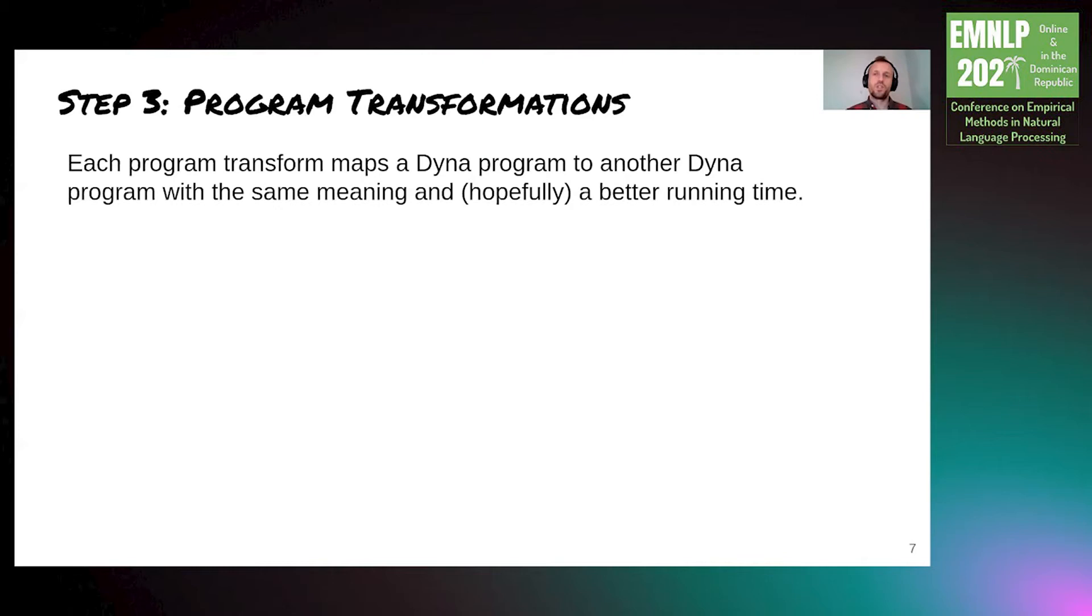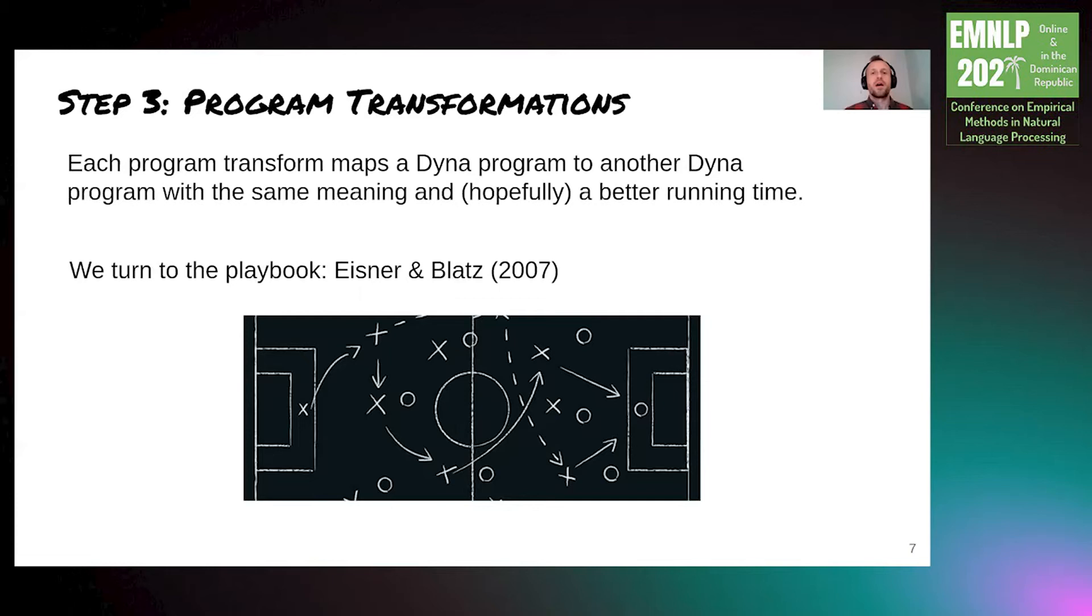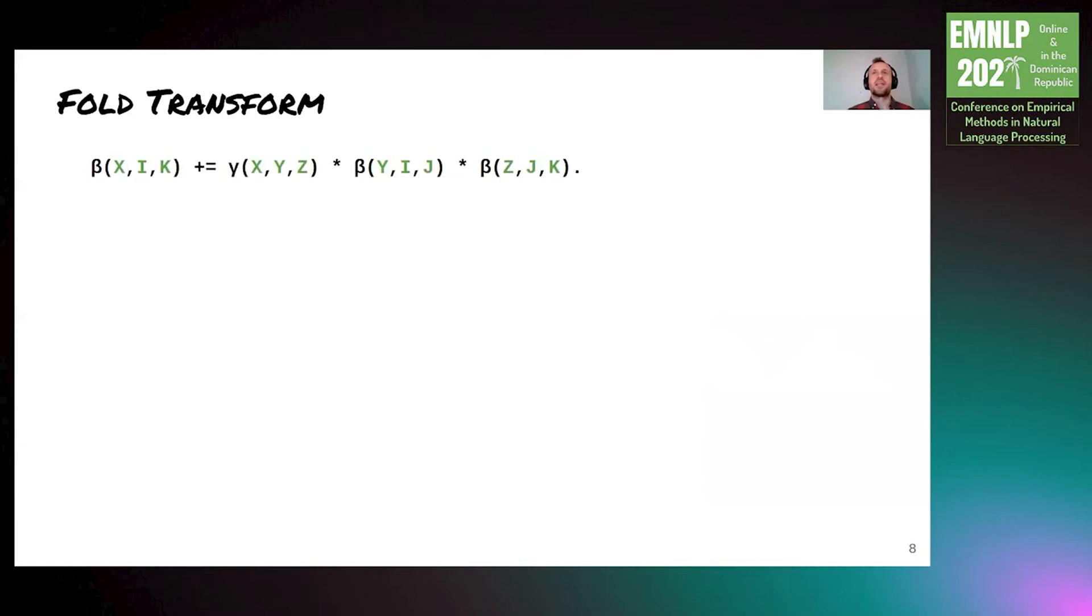Next, we consider program transforms, which are the edges of our search graph. A program transform is a function that maps a Dyna program to another Dyna program, with the same meaning and hopefully a better running time, although some transforms actually increase the running time, so that way we can later improve it with a subsequent transform. We use the program transforms described in this paper. Actually, we use a subset of them. And they're enough to recover many important speedups from the literature. The most useful transform appears to be this folding transform, which I'm now going to tell you about.